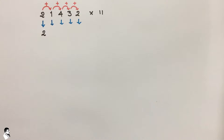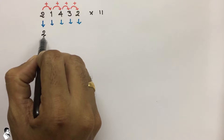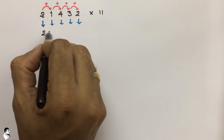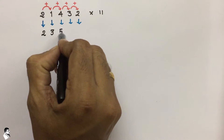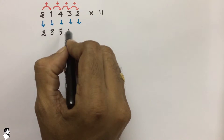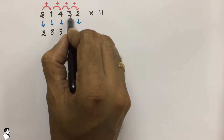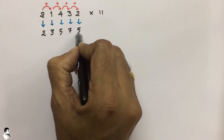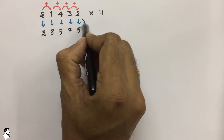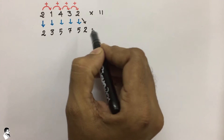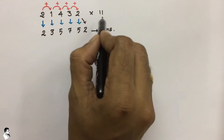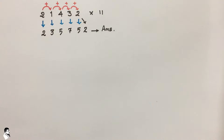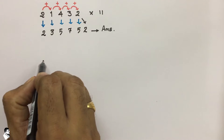So 2 is written as it is. Now 2 plus 1 is 3, then 1 plus 4 is 5, then 4 plus 3 is 7, and 3 plus 2 is 5. Write down the last value as it is, that is 2. So this is the answer when we multiply 21432 with 11. It is a very easy technique.